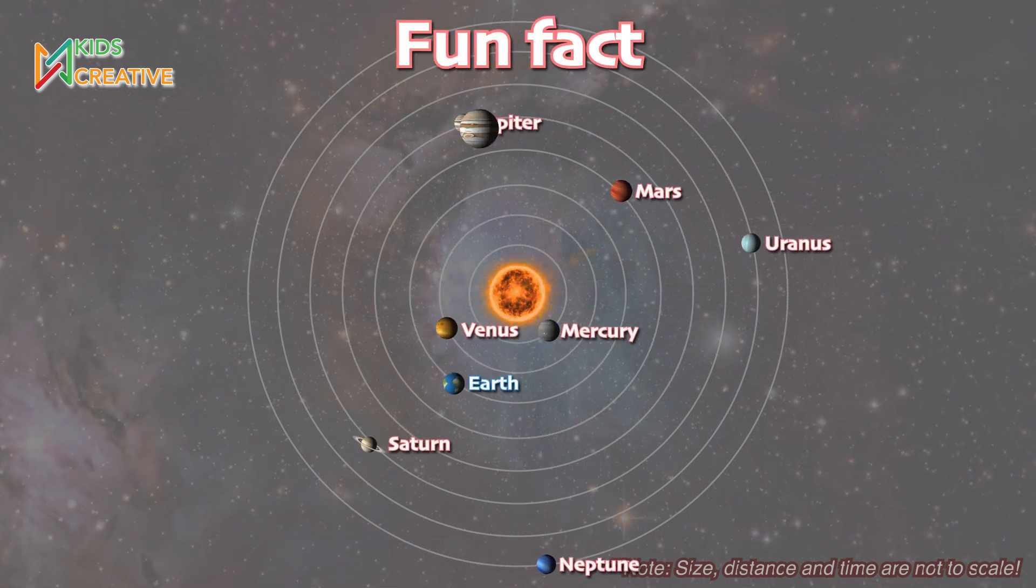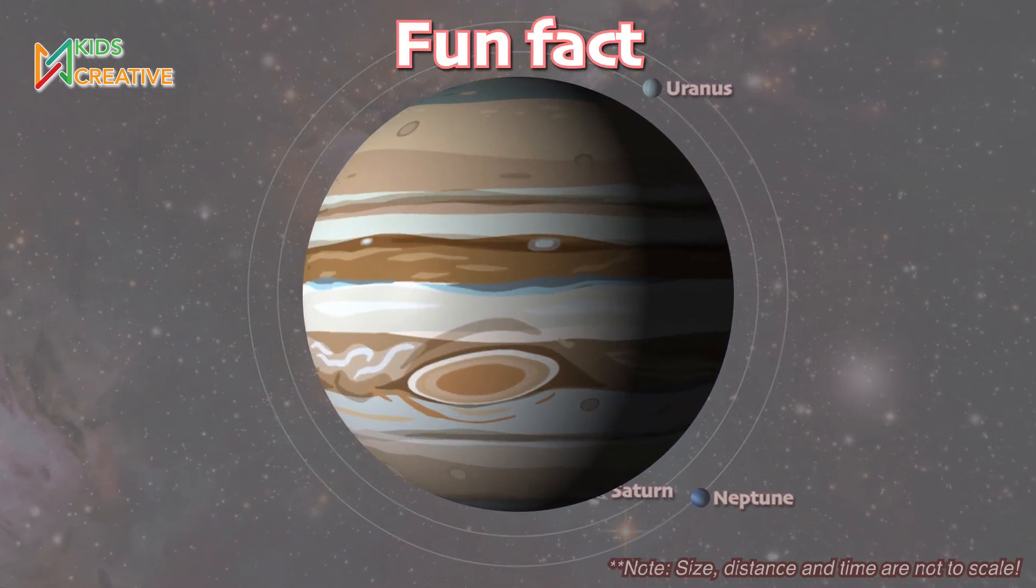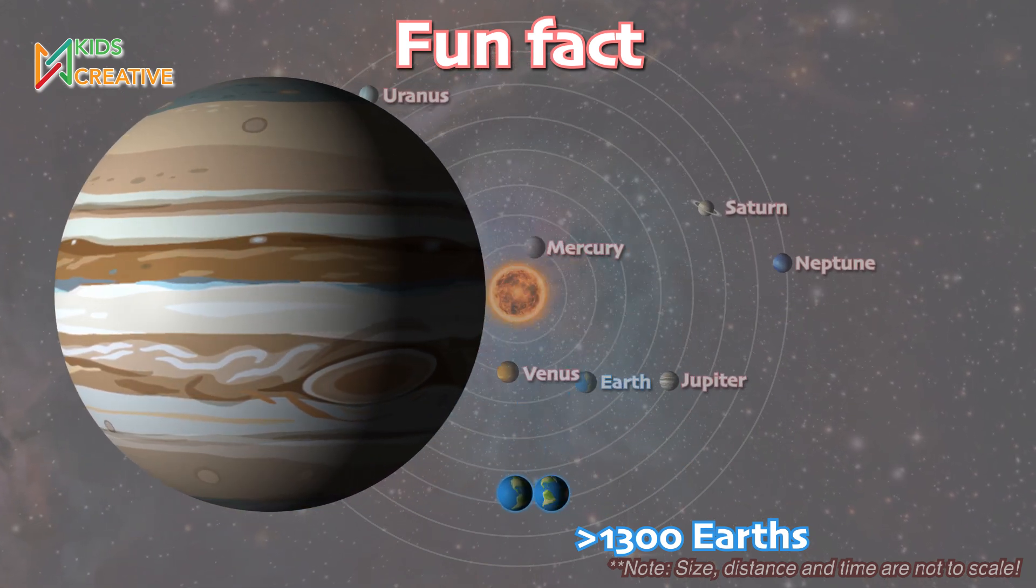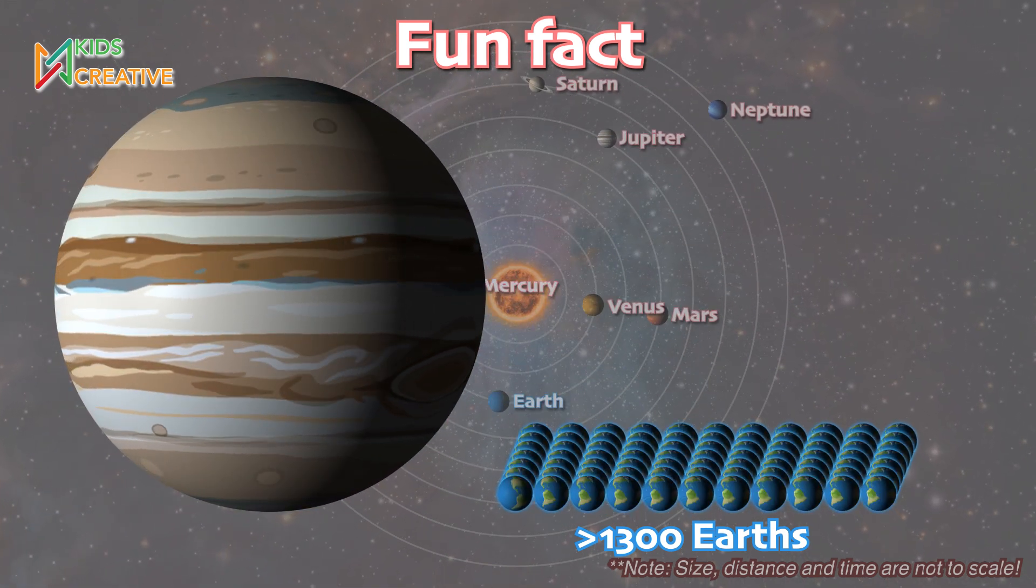Do you know that Jupiter is so big? It could fit more than 1,300 Earths inside it? Whoa!